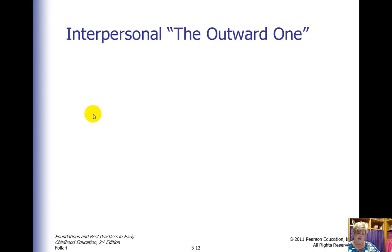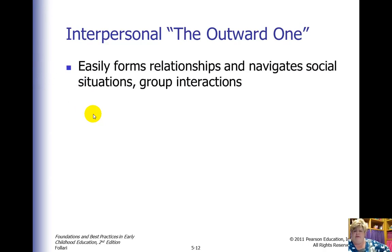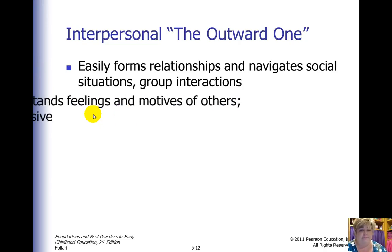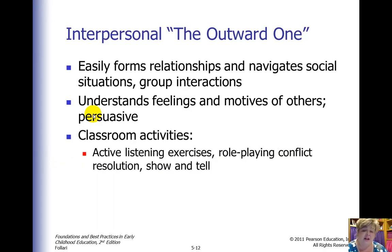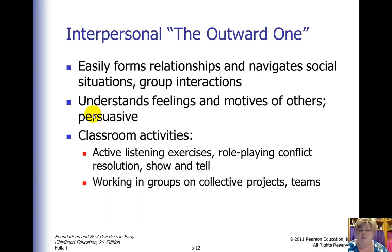Interpersonal children — the outward ones — have the ability to form relationships and navigate social situations and group interactions. They understand the feelings and motives of others and are very persuasive. Their activities should include active listening exercises, role-playing conflict resolution, show and tell, and working in groups on collective projects. They love working as teams and are great at group story writing.